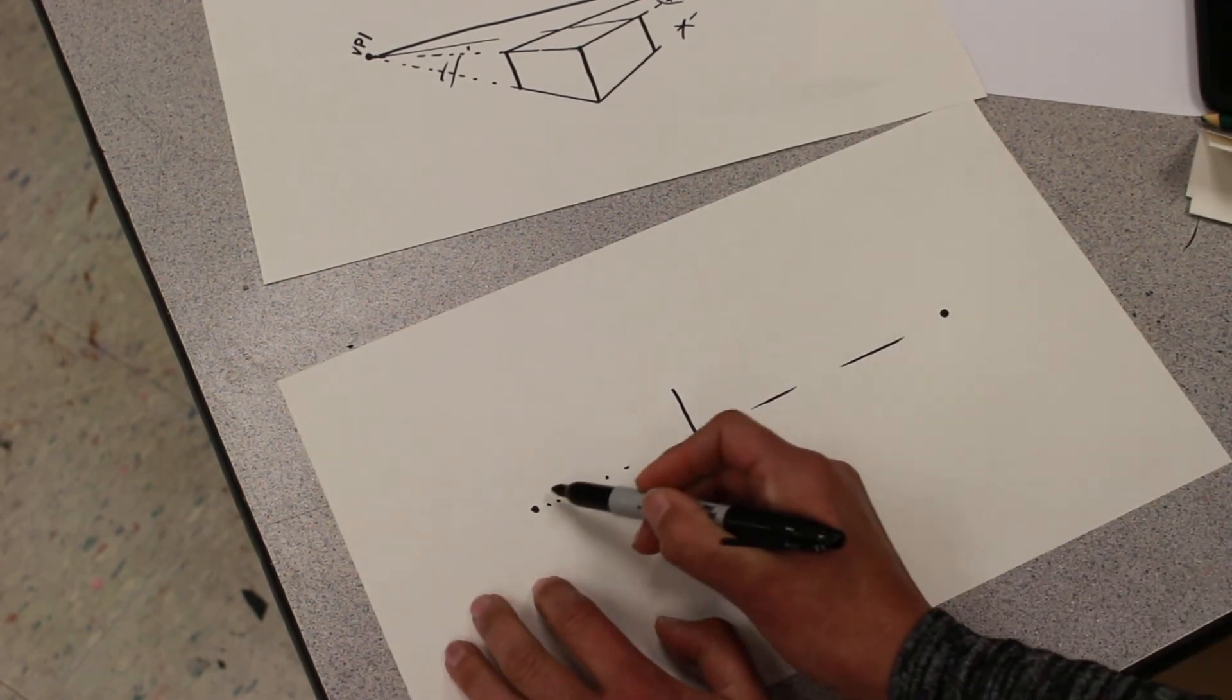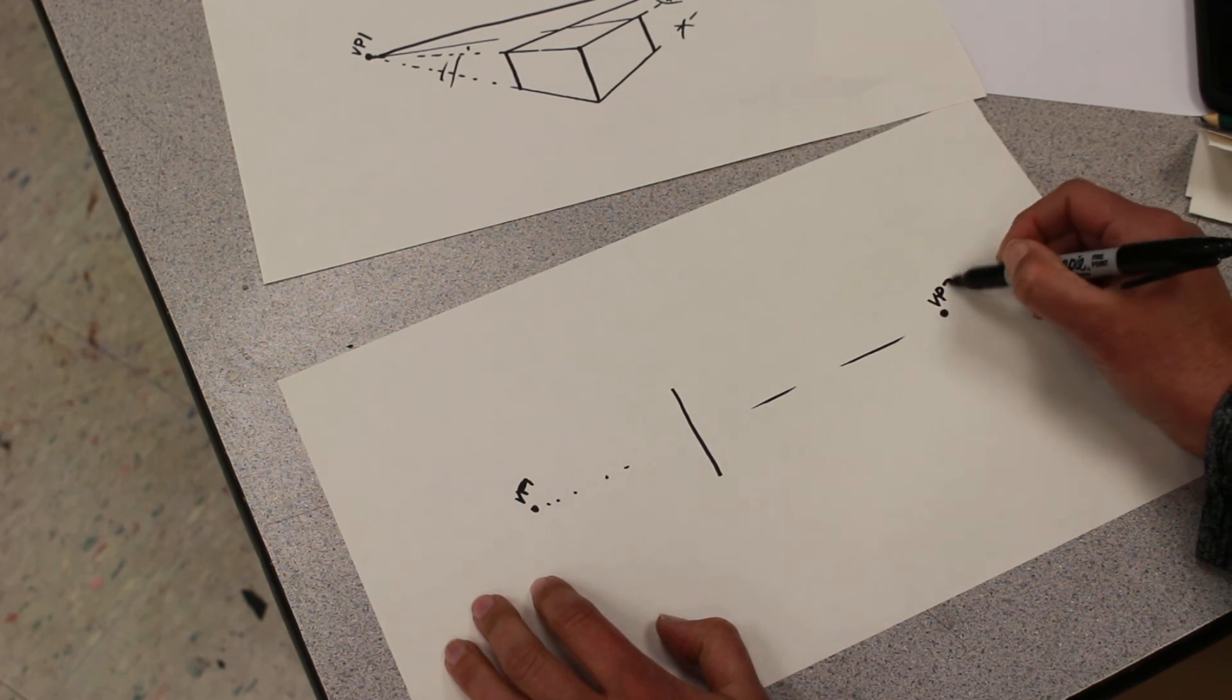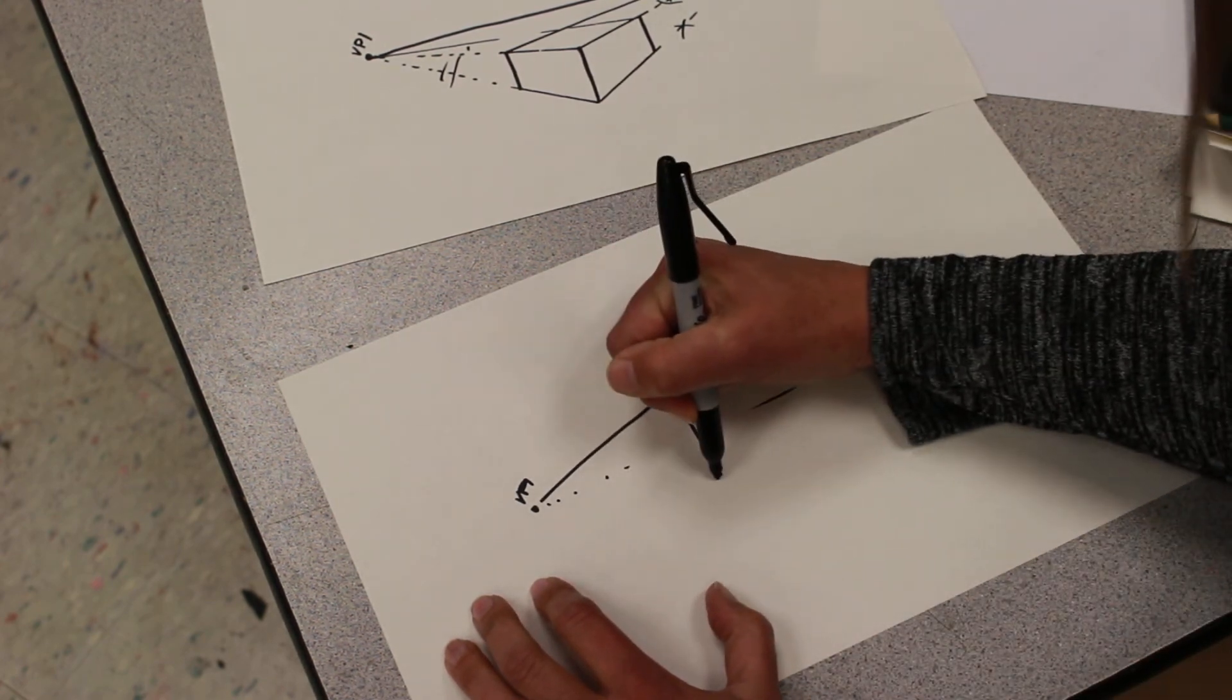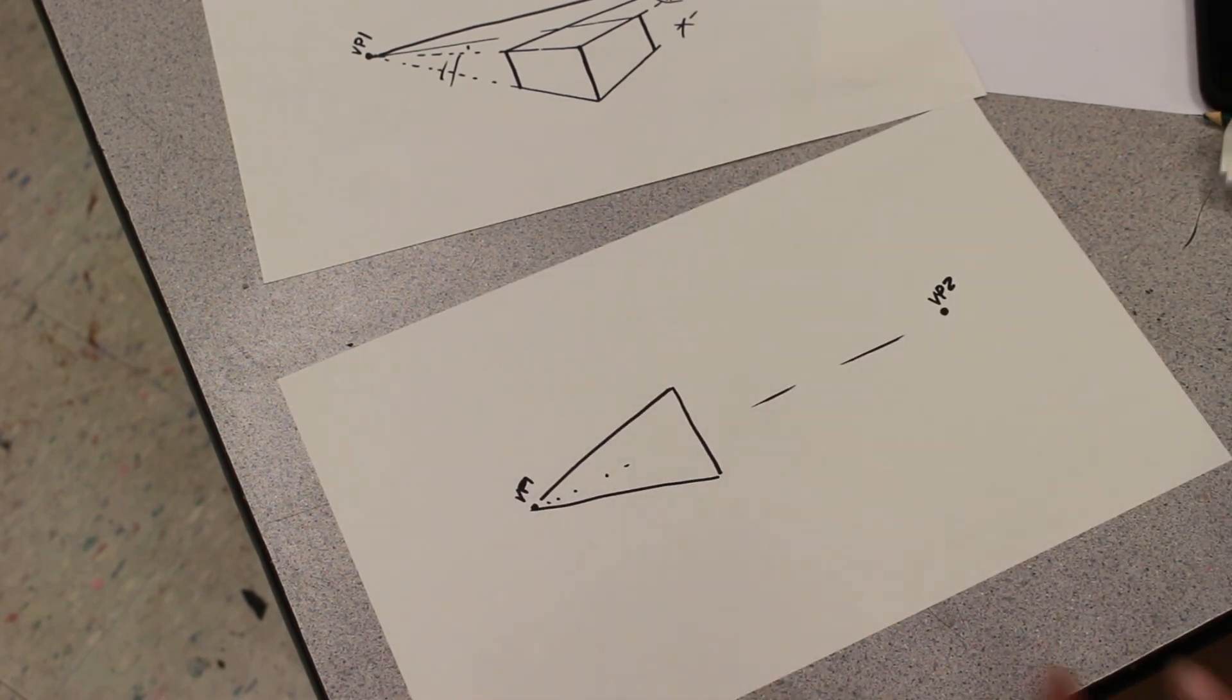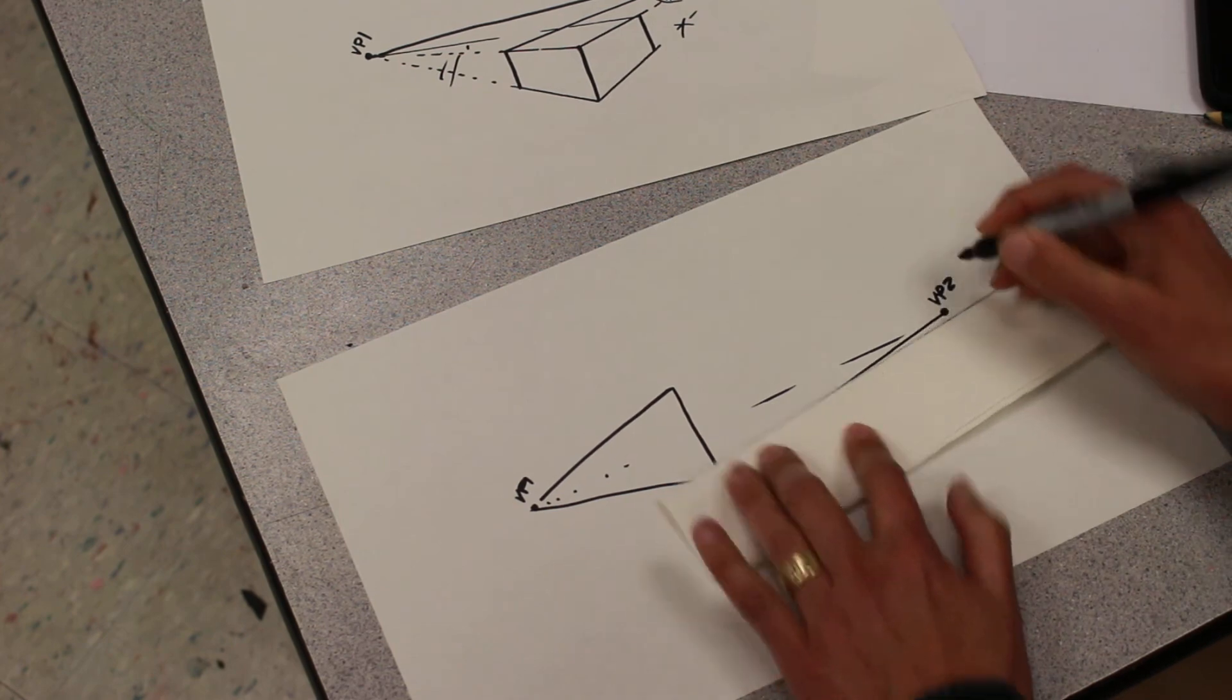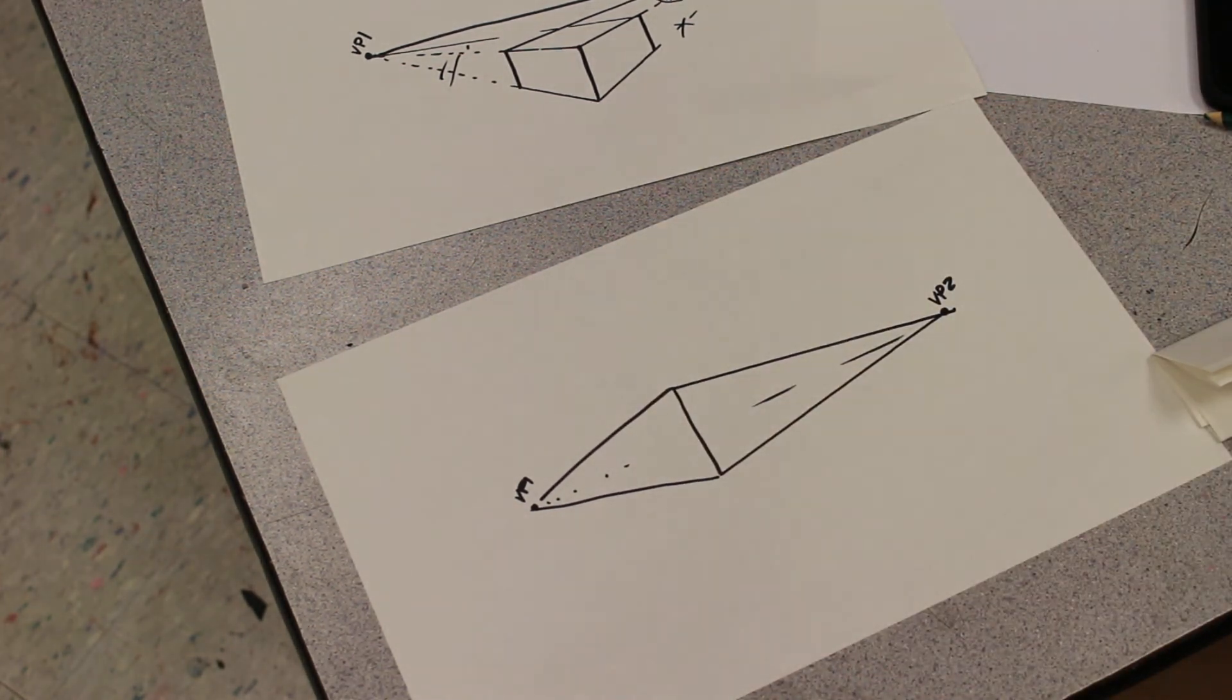So same procedure. This one's a little bit easier. So vanishing point one, vanishing point two, the top and the bottom of this line will go to vanishing point one and vanishing point two. It looks like a kite when you're done.